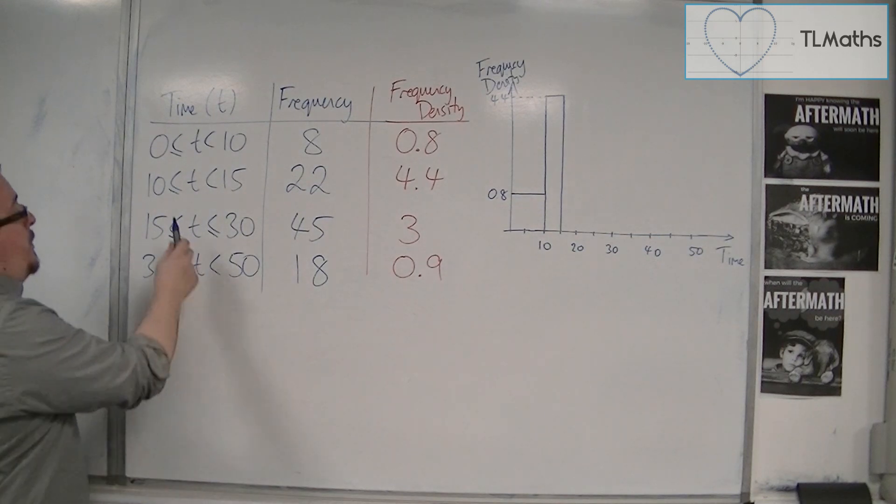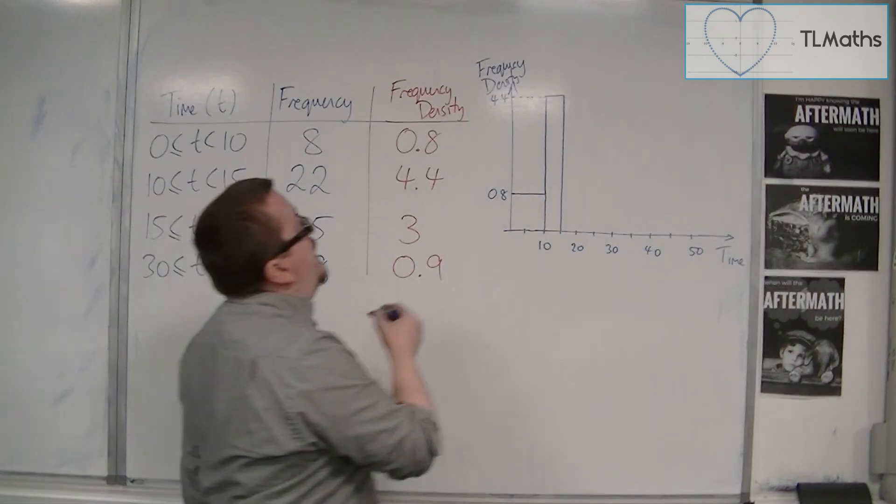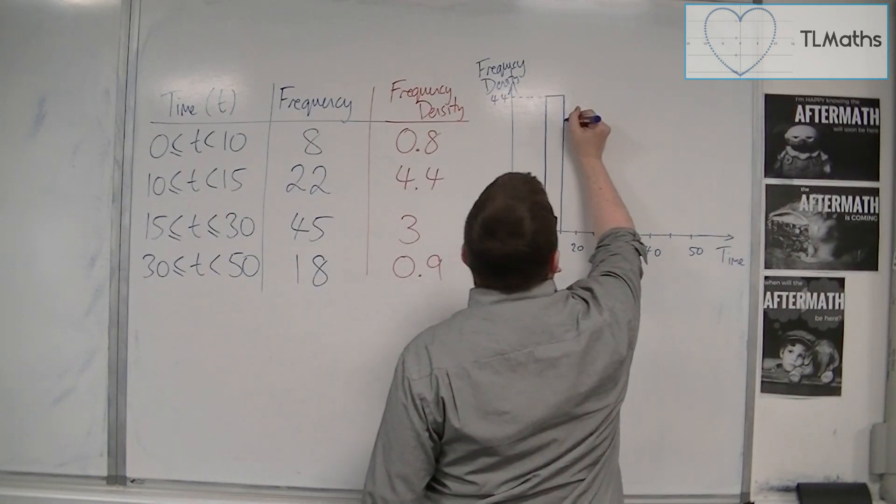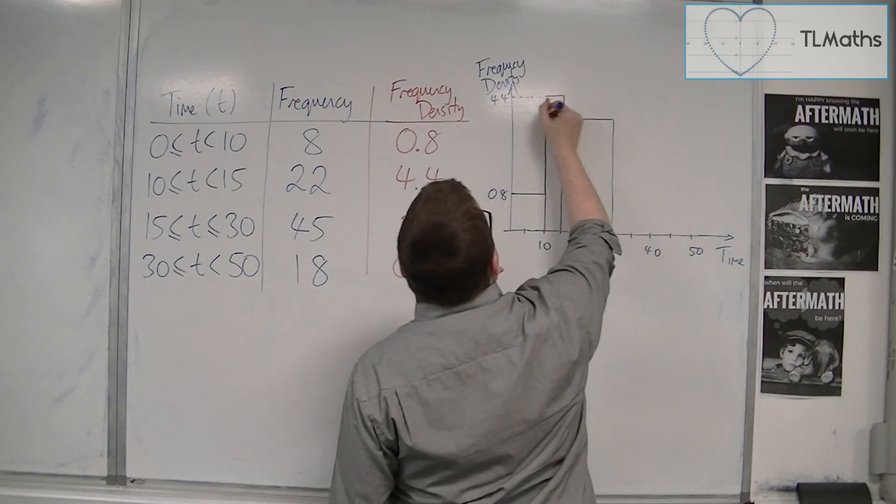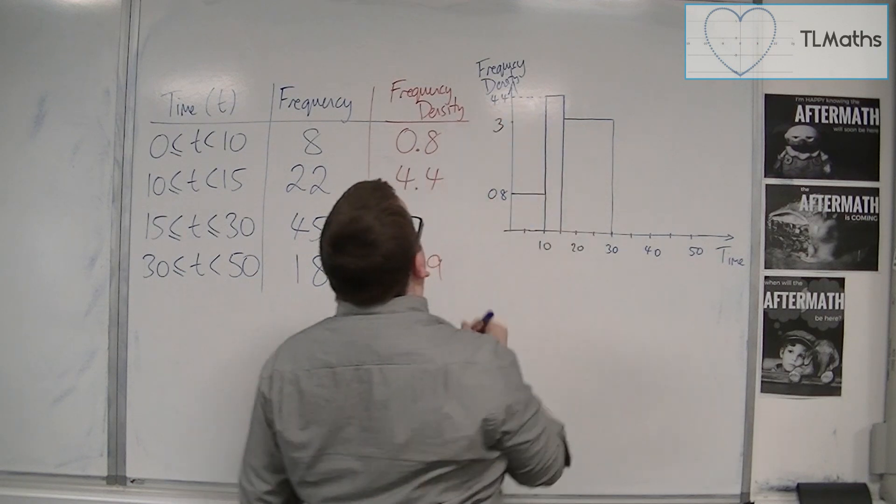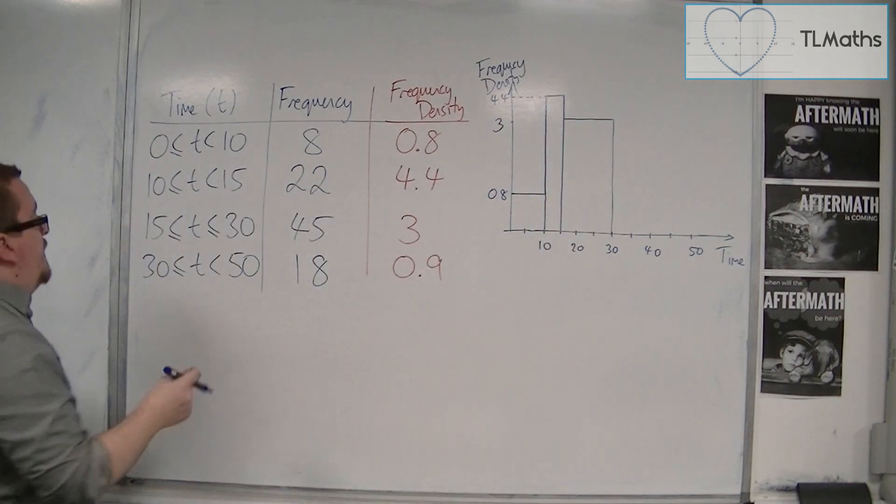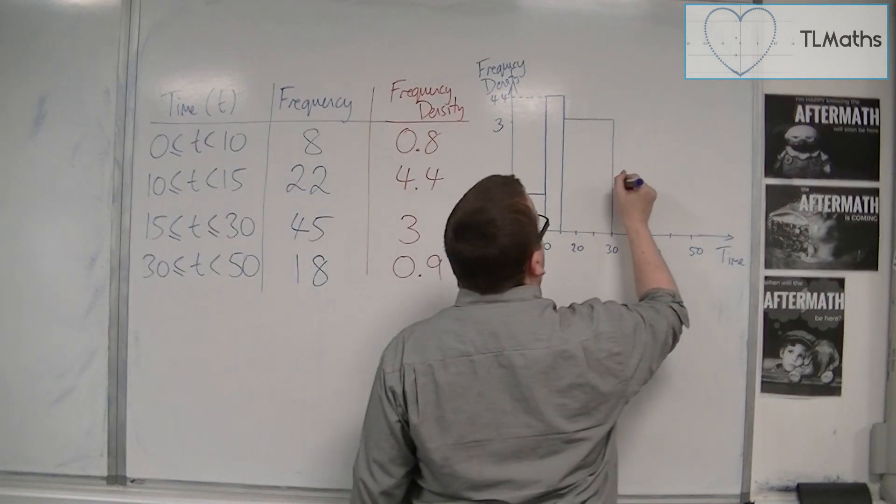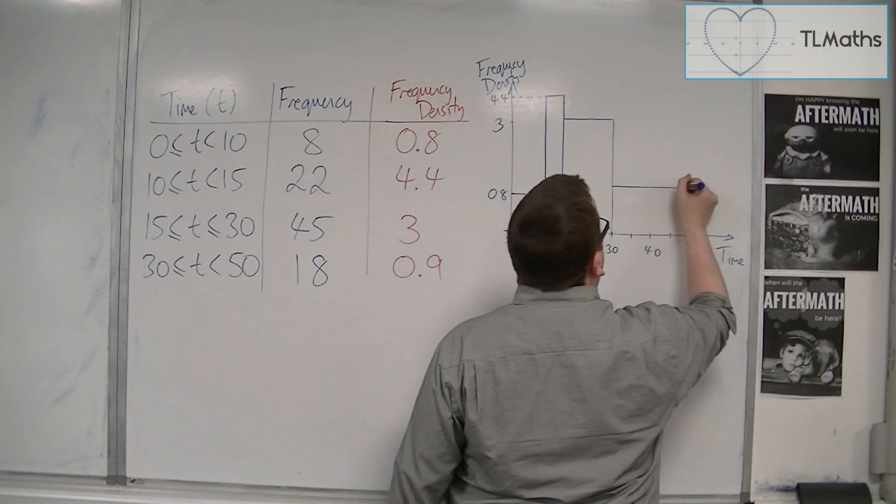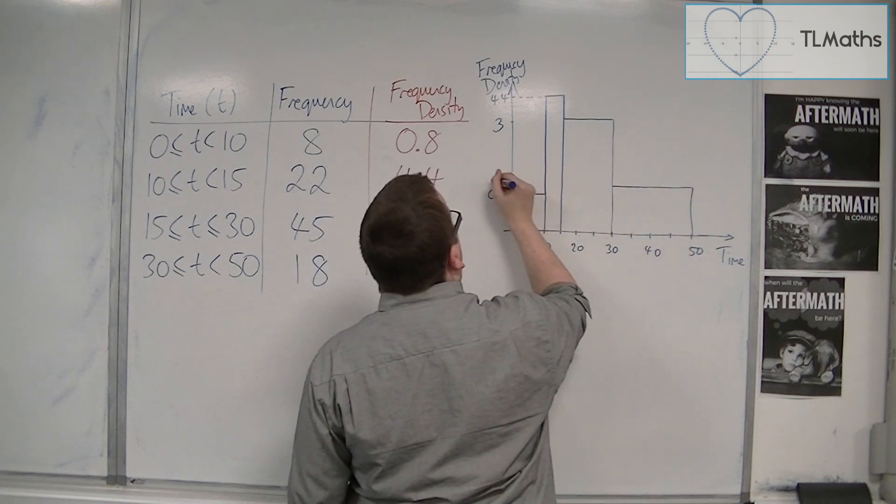So I'm going to drop it slightly, 15 to 30. That can be 3. And then 30 to 50, we're at 0.9. So 30 to 50, we're at 0.9.